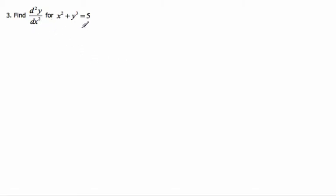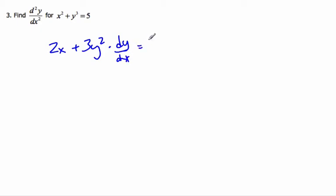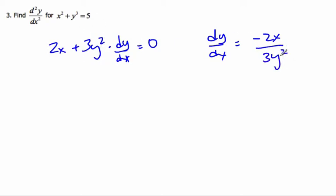We want to find the second derivative of this function using implicit differentiation. Taking the derivative, we get 2x plus 3y squared times dy/dx equals 0. Rearranging, the derivative dy/dx equals negative 2x divided by 3y squared. That's the first derivative, but we're looking for the second derivative.